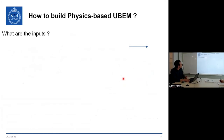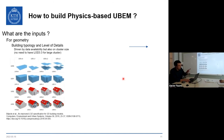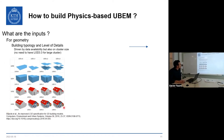For U-BEM inputs, there are two types. On the geometry side, the Level of Detail (LOD) matters. For very large clusters you would never model at LOD 3.3. U-BEM typically operates between LOD 1.1 and LOD 2.1, with LOD 1.1 to 1.3 being most common and practical for large-scale studies.